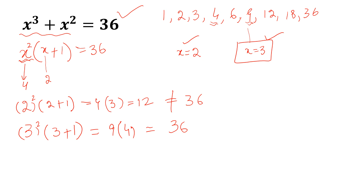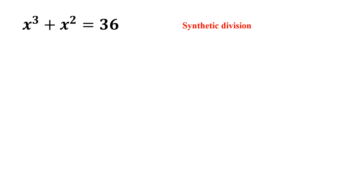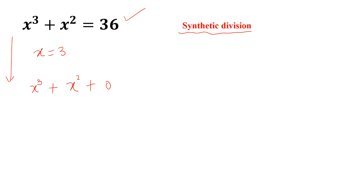But we need to find the other two solutions. We can find the other two solutions by synthetic division method. We know that x is equal to 3 is one of the solutions to this equation. By synthetic division method, first we write this equation in the form x cube plus x square plus 0 into x minus 36 is equal to 0.